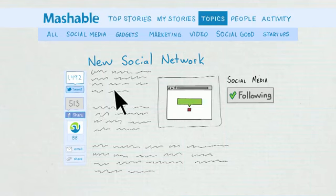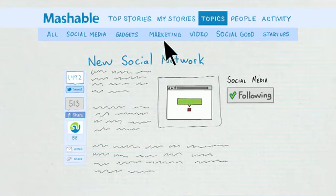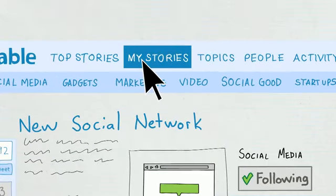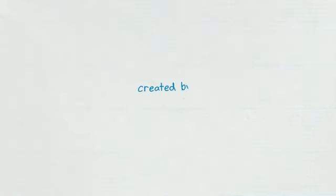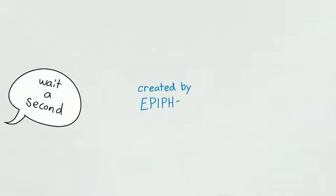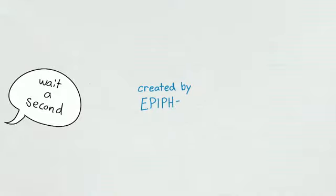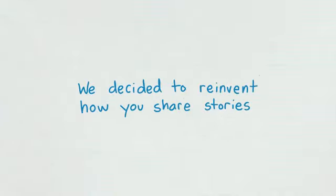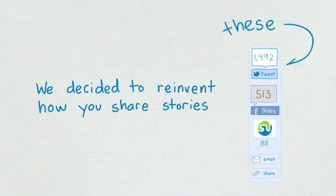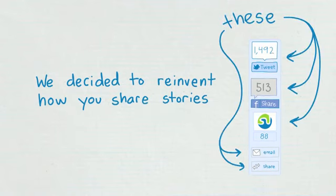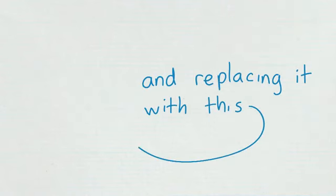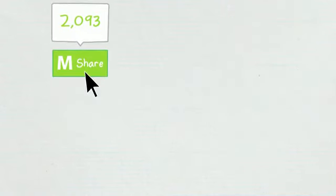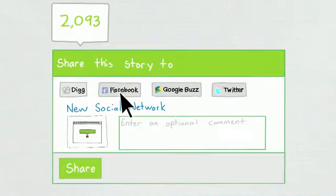To see all the stories that Mashable Follow picks for you, just click on the My Stories menu option. But wait — there's more. We decided to reinvent how you share stories you like by getting rid of the old buttons and replacing them with something new. Now you can share on all your favorite social media platforms with one click.